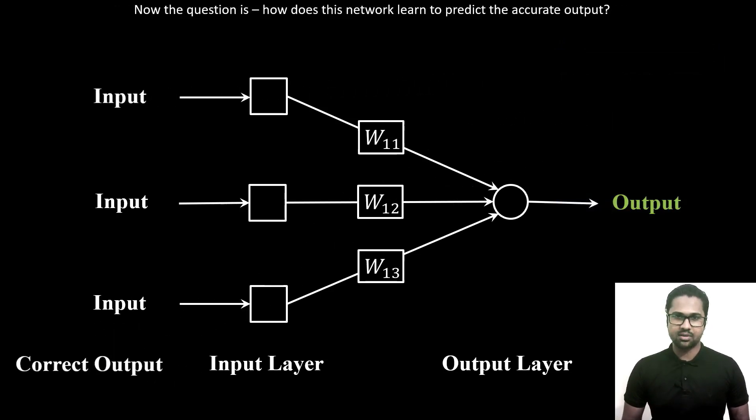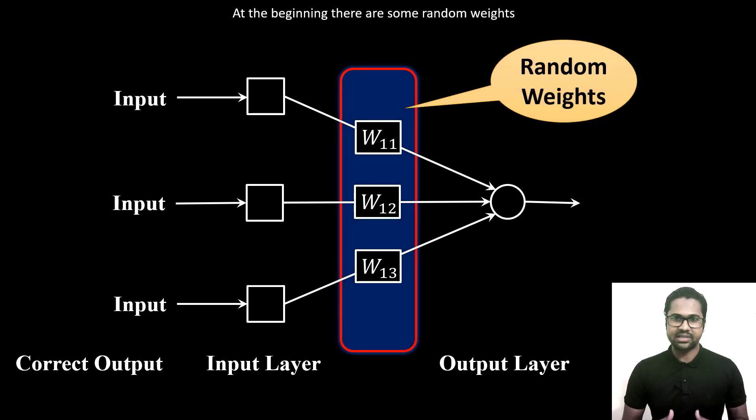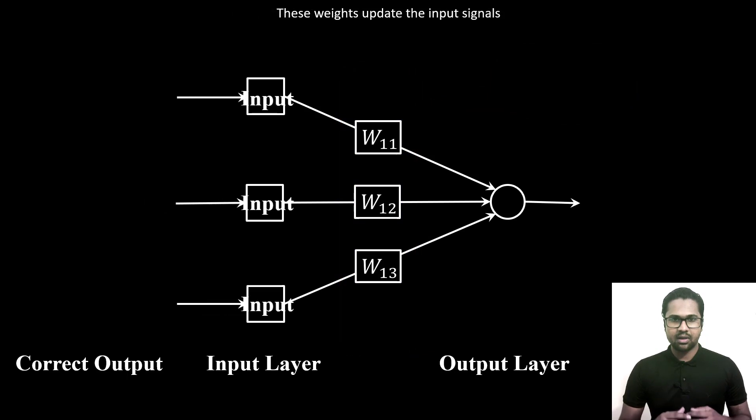Now the question is, how does this network learn to predict the accurate output? The learning process starts with getting the first output. At the beginning, there are some random weights.